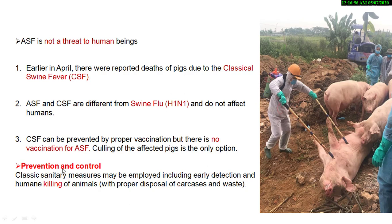For prevention and control: when an animal is infected, culling is carried out with proper disposal of carcasses and waste. There is no vaccine for ASF. Classical Swine Fever does have a vaccine. Swine flu is a separate disease that can affect humans, and we have seen outbreaks of it before.